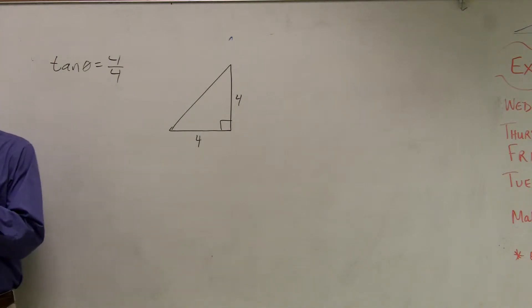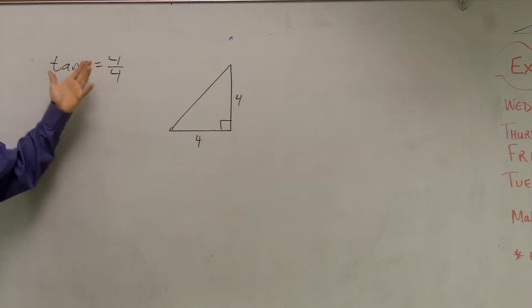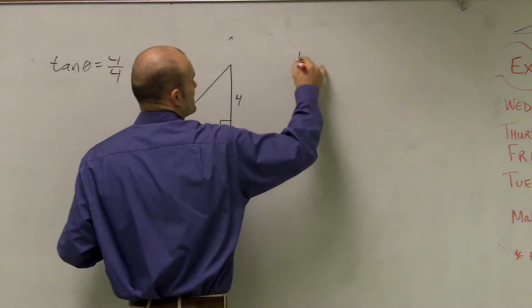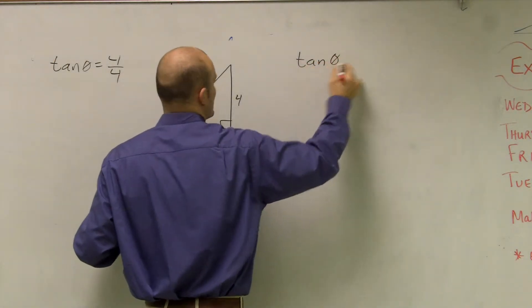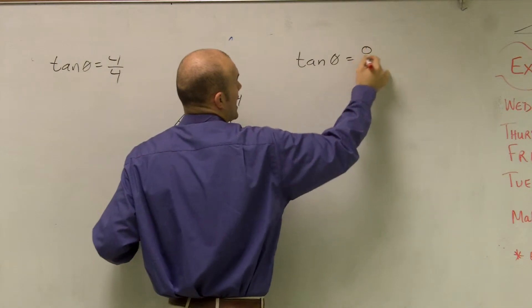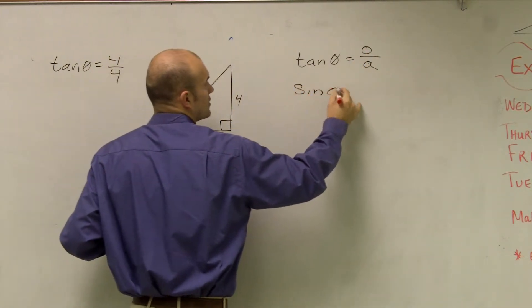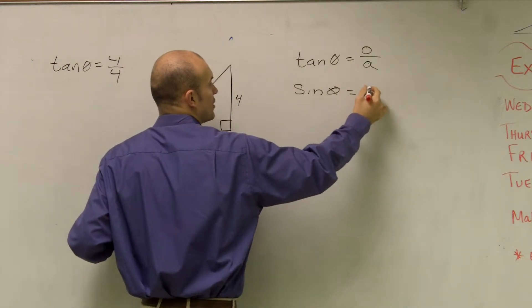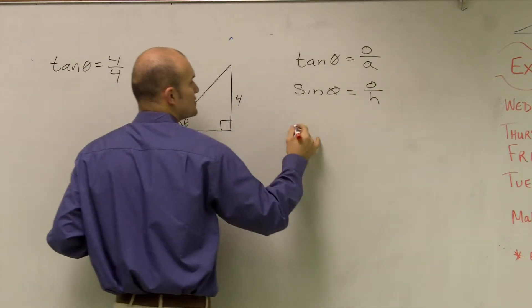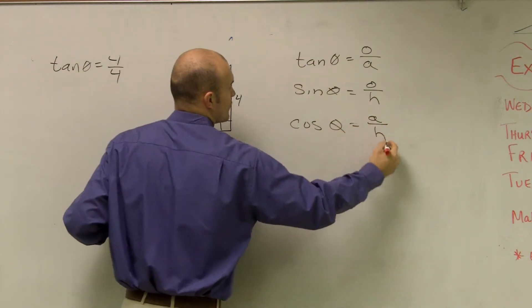So when you want to evaluate your trigonometric functions, if they say tangent of 4 over 4, you guys need to remember, well, what does tangent represent if we're going to look at a triangle? Well, tangent of theta, and let's just call this one theta, represents your opposite over your adjacent. Sine of theta represents your opposite over hypotenuse. Cosine of theta represents your adjacent over hypotenuse.